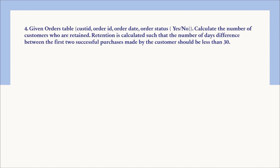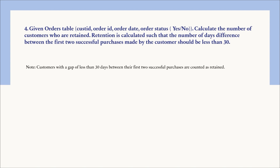Now the fourth question: you're given an orders table with columns customer_id, order_id, order_date, and order_status (yes/no). You have to calculate the number of customers who are retained. Retention is defined as the number of days difference between the first two successful purchases being less than 30. To calculate retention, we identify customers who made two consecutive successful purchases within 30 days of each other.